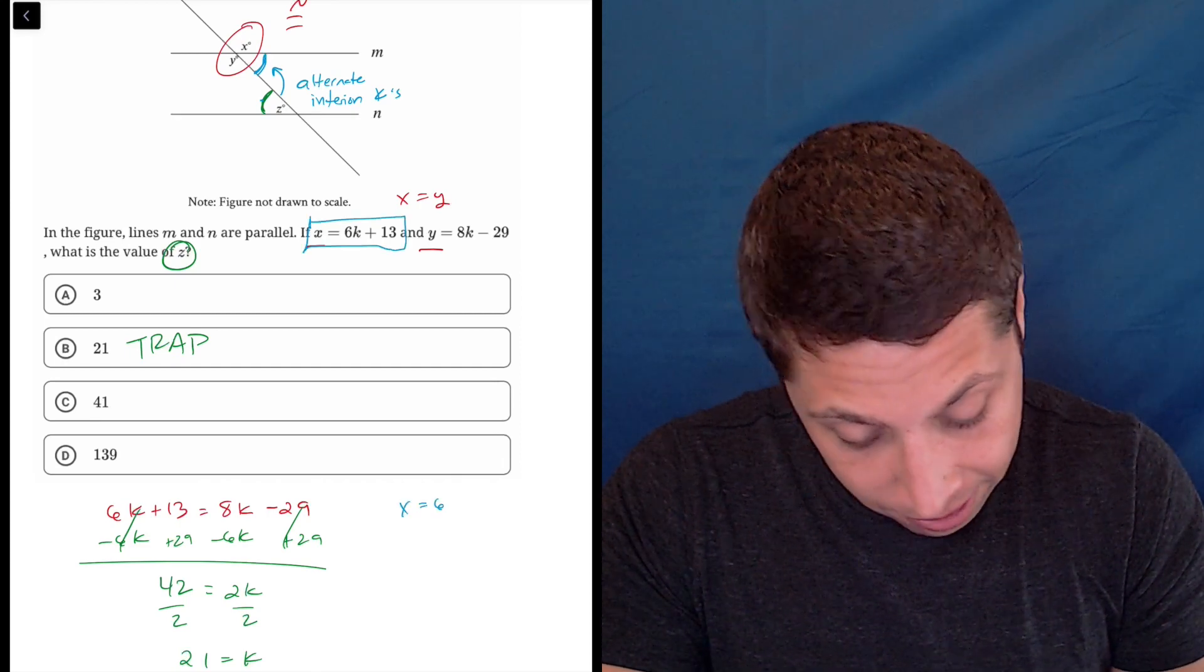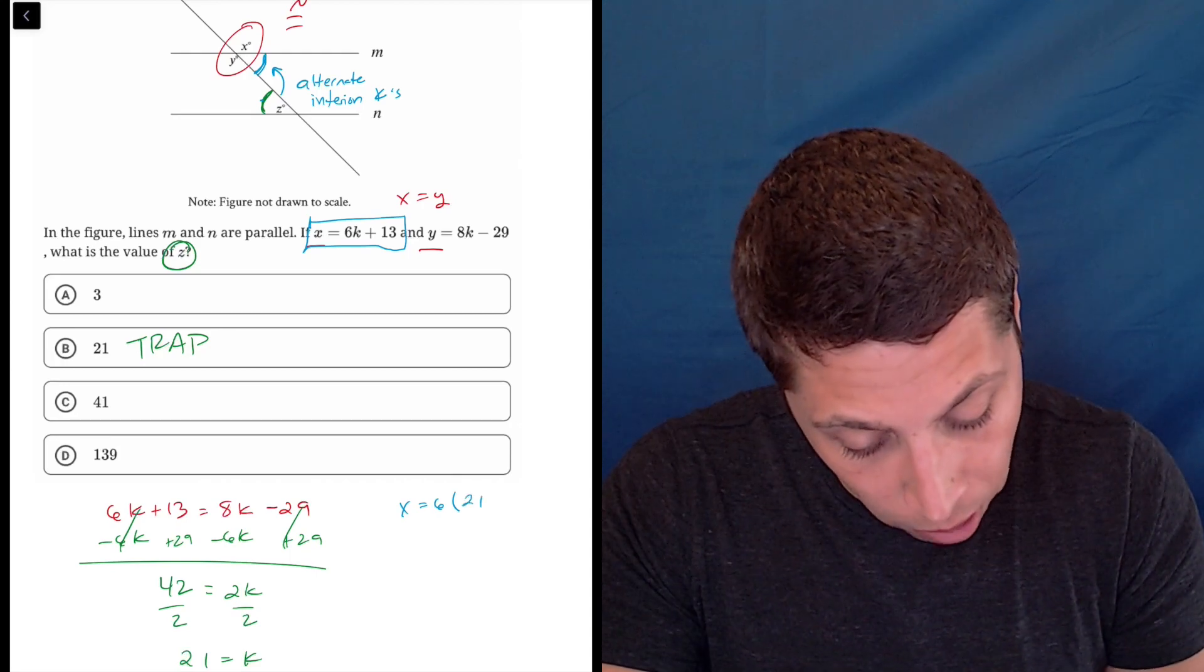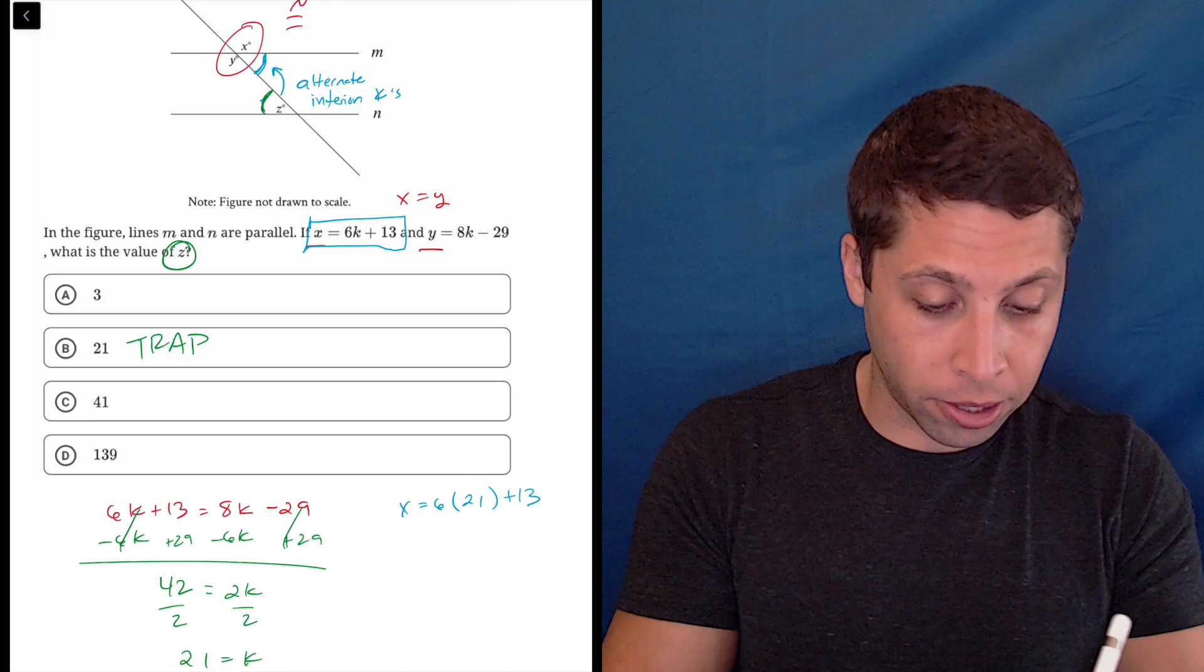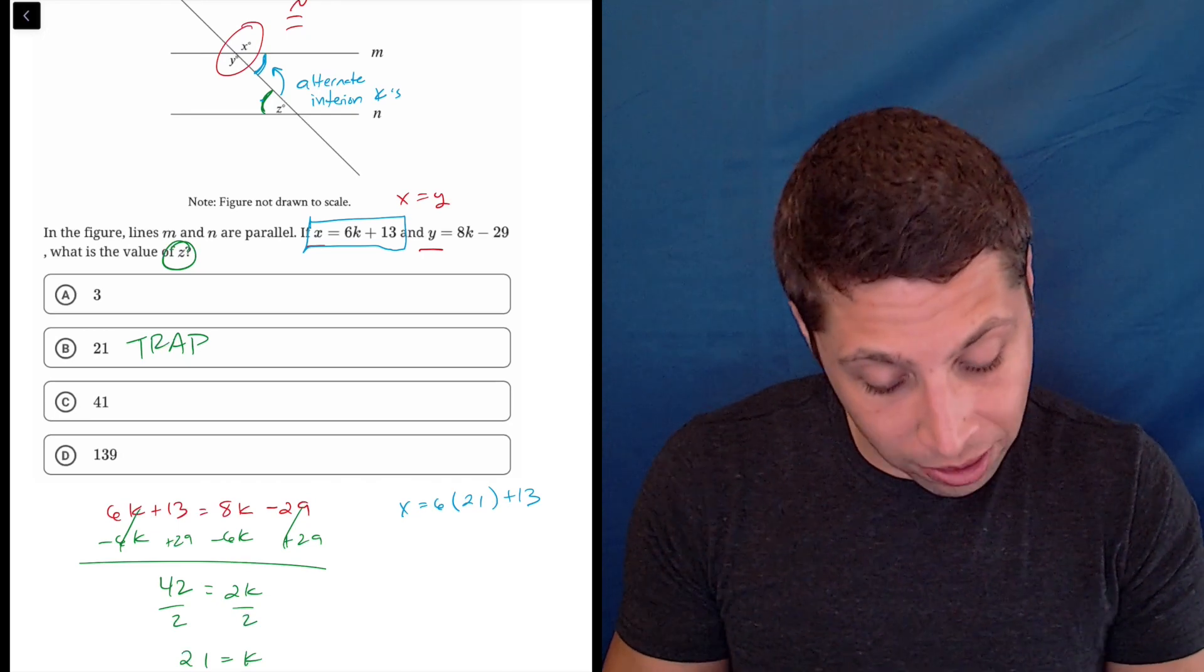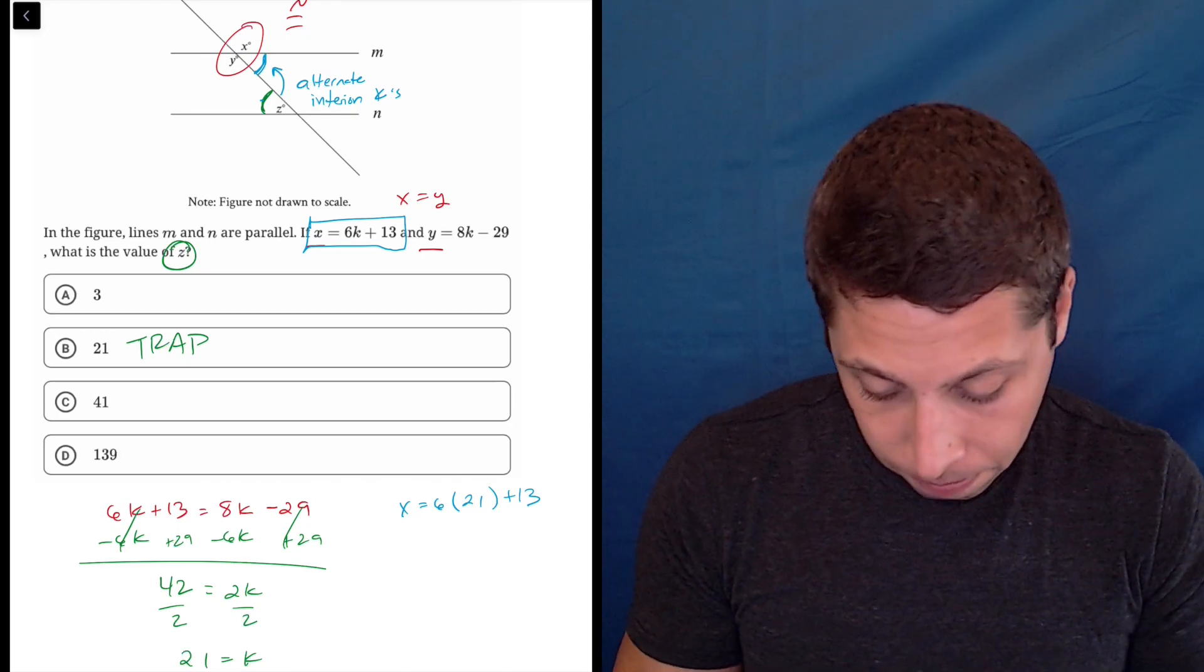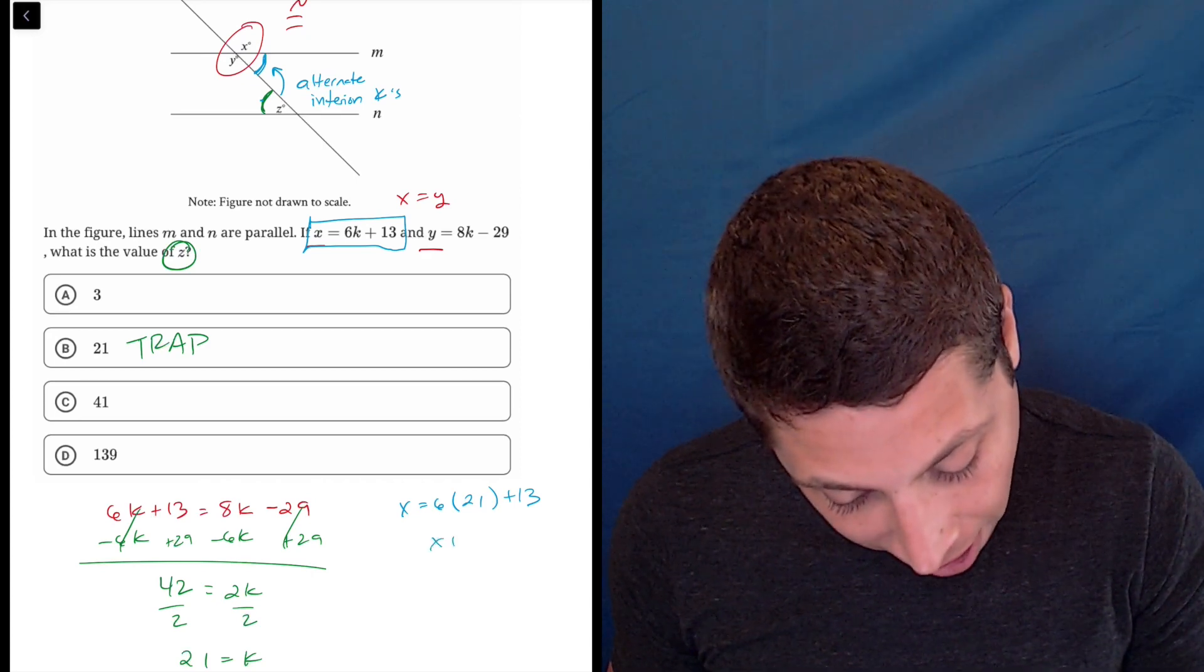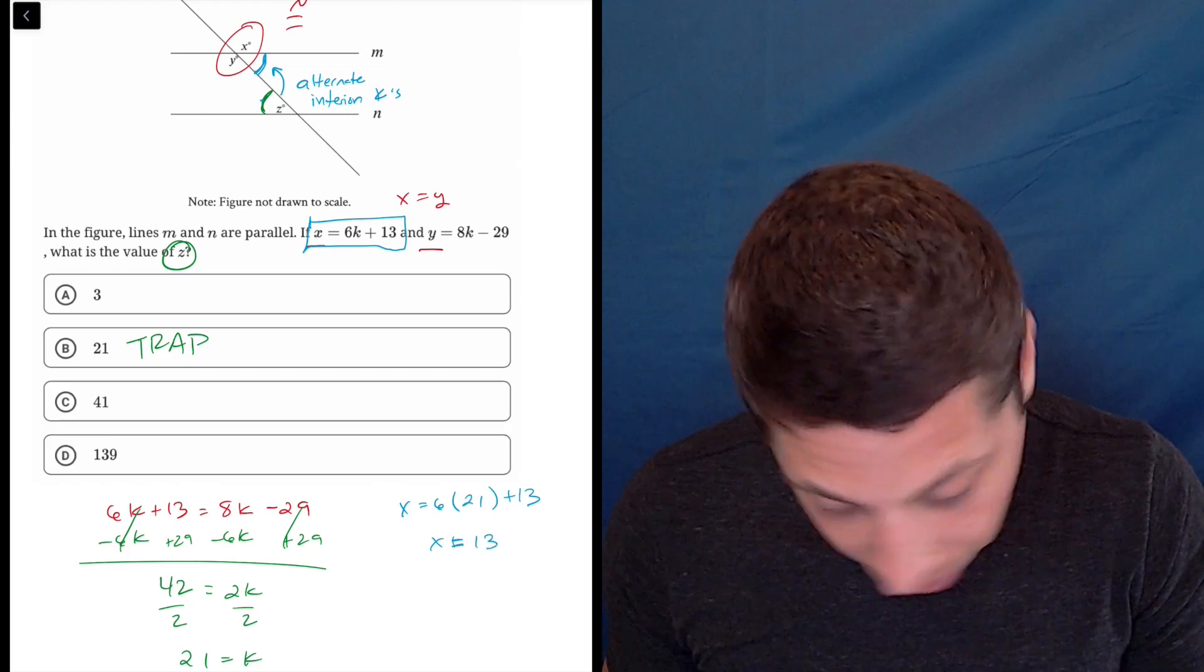So that means X is 6 times, we said K is 21, plus 13. So I'm just going to get my regular calculator. 6 times 21 is 126 plus 13 is 139. So that is the value of X.